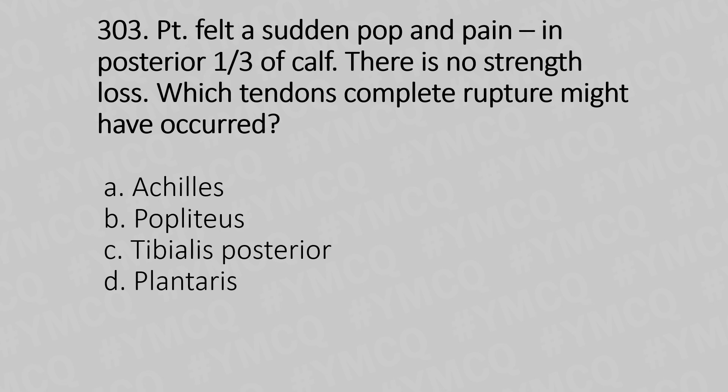Question 303: A patient felt a sudden pop and pain in the posterior one-third of the calf. There is no strength loss. Which tendon complete rupture might have occurred? Option A: Achilles. Option B: popliteus. Option C: tibialis posterior. Option D: plantaris. The answer is Option A, Achilles.